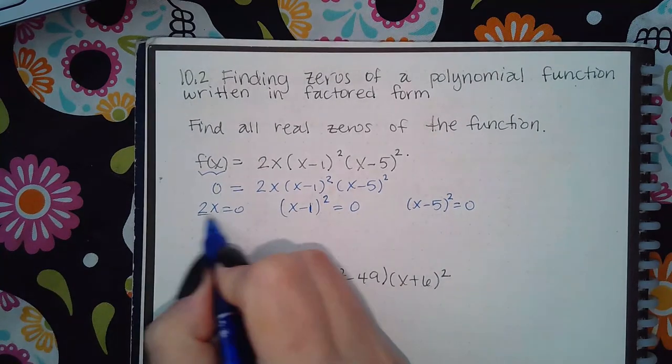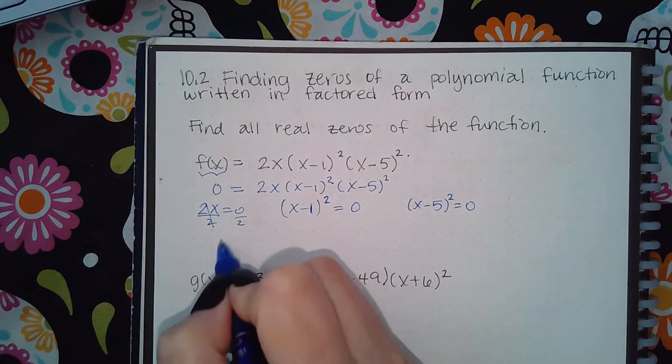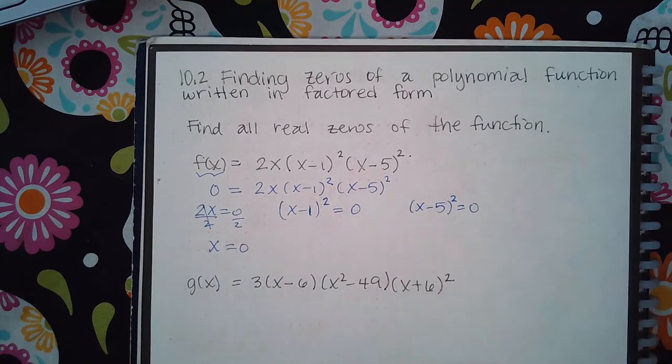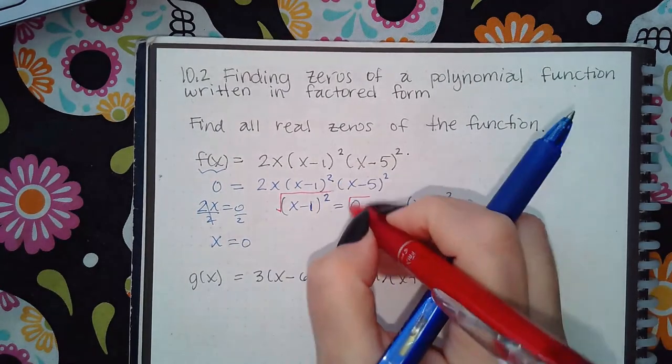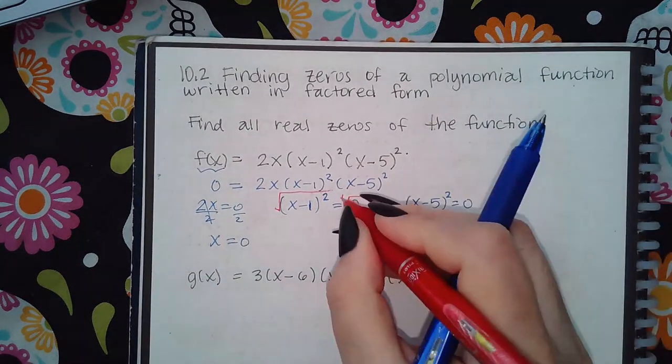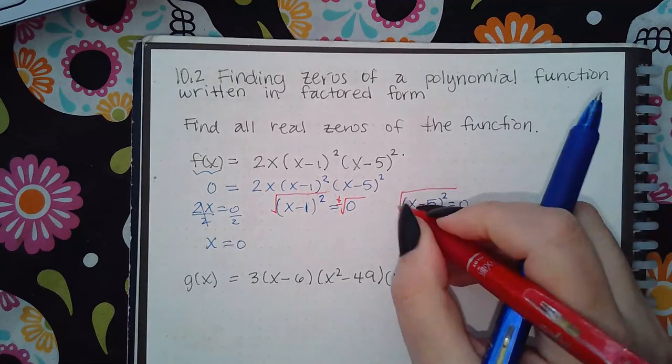So here I would divide by 2 on both sides and I get x equals zero. Here I would take the square root on both sides, and normally you get plus or minus, and the same for this equation.